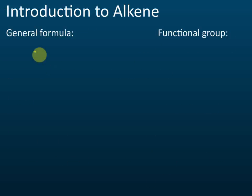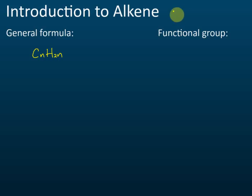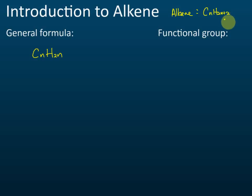The general formula for alkene is CnH2n. For alkane, the general formula is CnH2n+2. From these two formulas, we can see the difference: alkane has the '+2', while alkene does not.